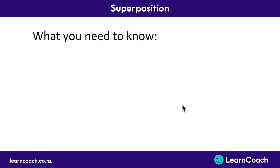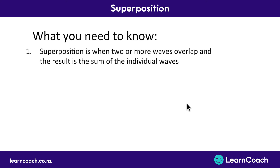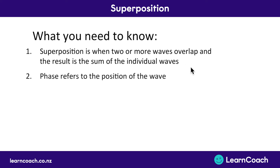So let's look at what you need to know from this video. Superposition is when you have two or more waves, they overlap, and then the result is the sum — the added together version — of the individual waves. The second thing you need to know is that phase refers to the position of the wave. You could have an up wave or a down wave. If they're in phase, it means they're the same type of wave — either both up or both down. But if they're opposite, one up and one down, that means they are out of phase.